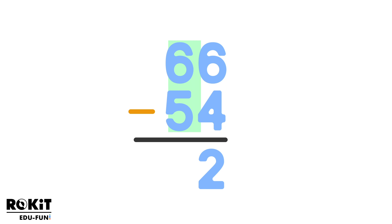Next, the left column, which is the tens column. 6 minus 5 equals 1. So our answer is, that's right, 12.